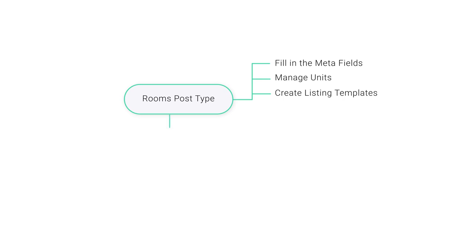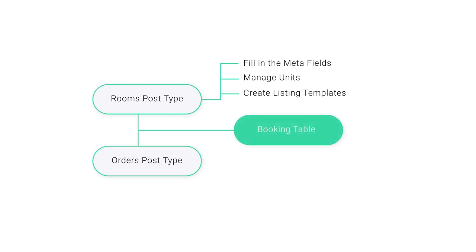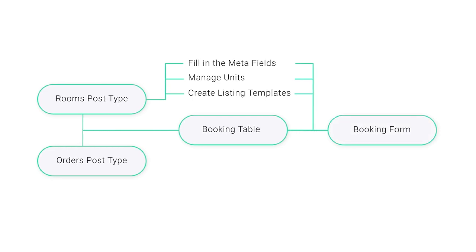The second post type we need to create is called the orders post type — or any name you choose — and it will keep information about every single booking made on your website. Then we need to make these two post types work together, and for that we will need to create a booking table. This booking table ensures that in the orders post type you get all the orders and the info users put into the booking form.